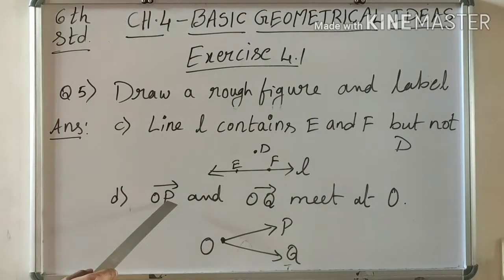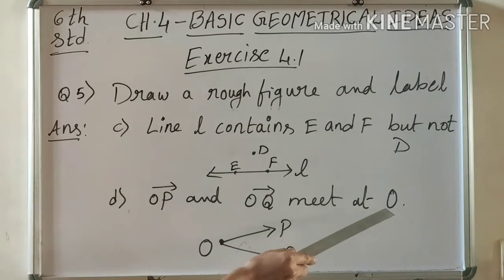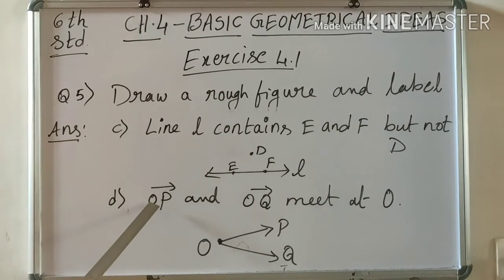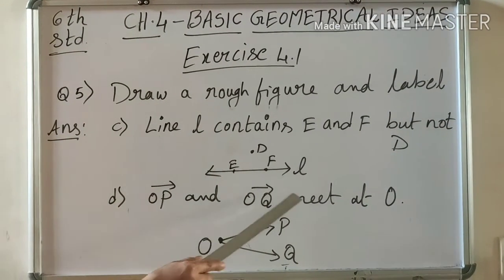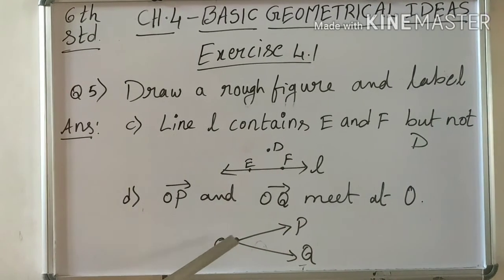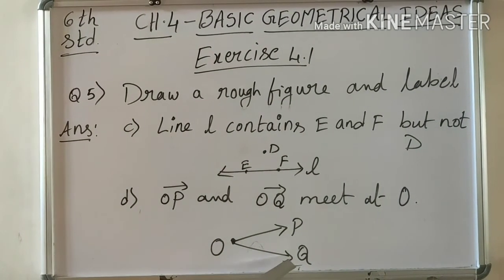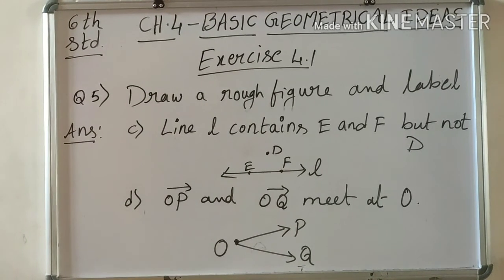Next D: OP and OQ meet at O. Here there are two rays, what are they? OP and OQ. Where do these two meet? At O. So draw it this way: OP and OQ, these two meet at O.